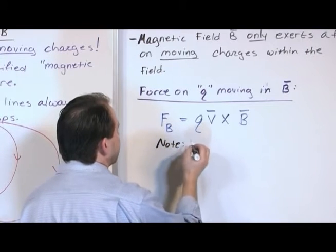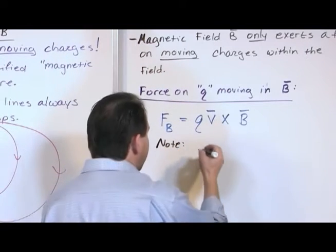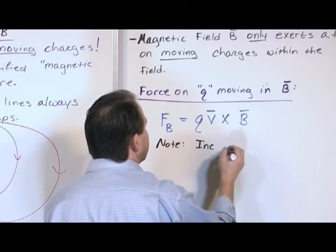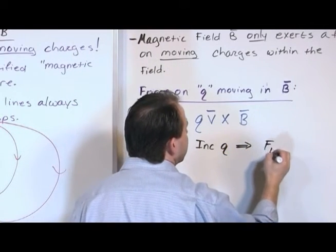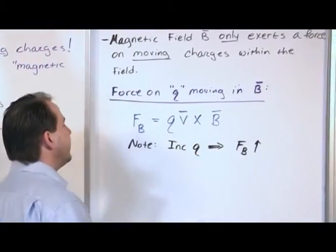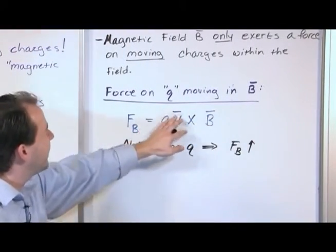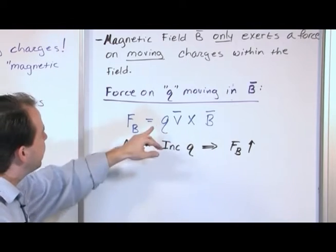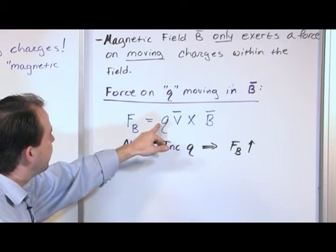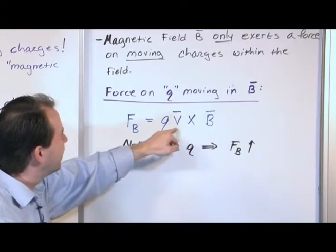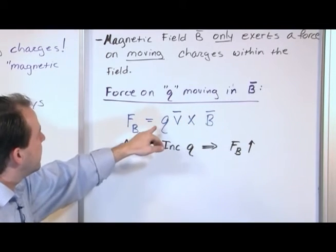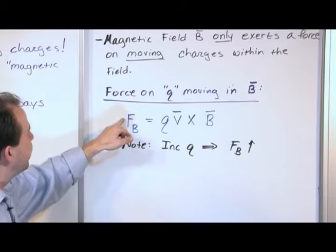But just think for a second. Note that if I increase the value of this charge, then the force due to the magnetic field increases. Like, if I hold everything else the same, forget about the cross product, we'll get there. But if I increase this charge, you can see they're all basically multiplied together. There's a cross product here, but that's a special kind of multiplication. If we increase the charge, the force increases.